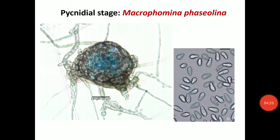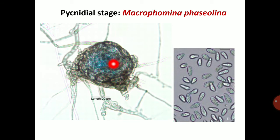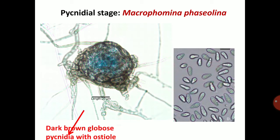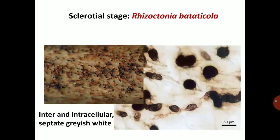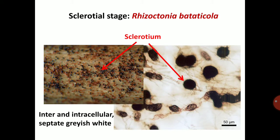In the pycnidial stage of Macrophomina fasciolina, pycnidia are flask-shaped structures lined with pycnidiophores. Pycnidiophores bear the pycnidiospores. Dark brown, globose pycnidia with an ostiole are produced, and spores are released through the ostiole. In the sclerotial stage, Rhizoctonia bataticola produces dark black, smooth sclerotia which tolerate unfavorable conditions.